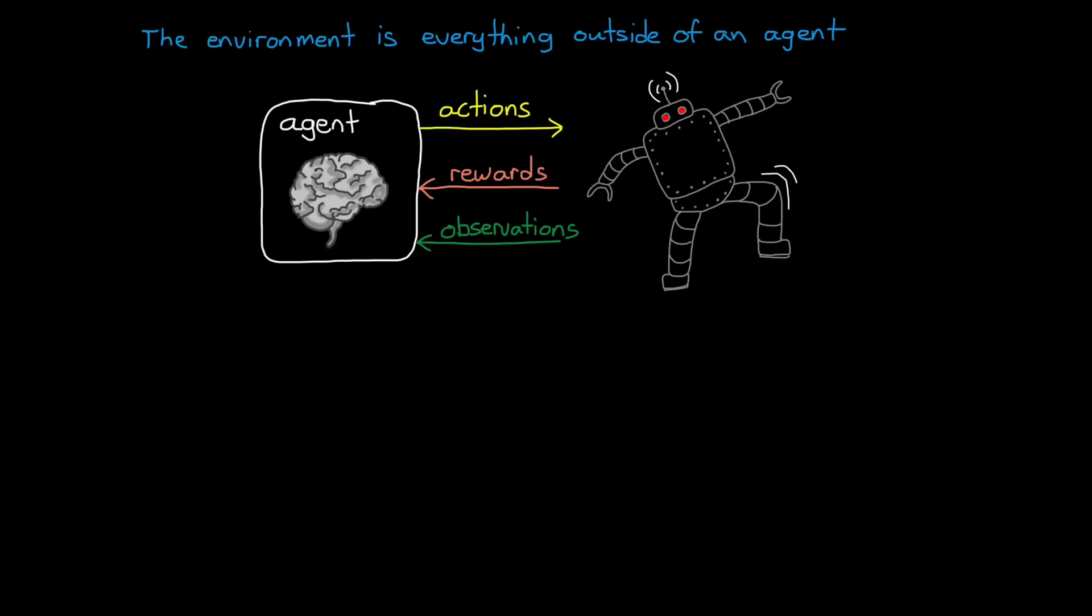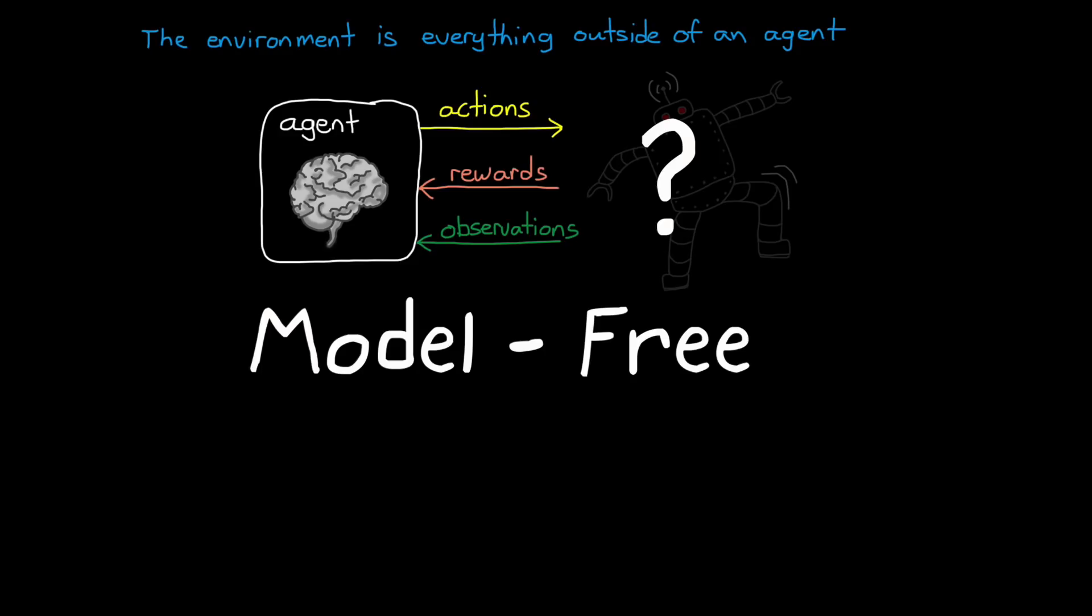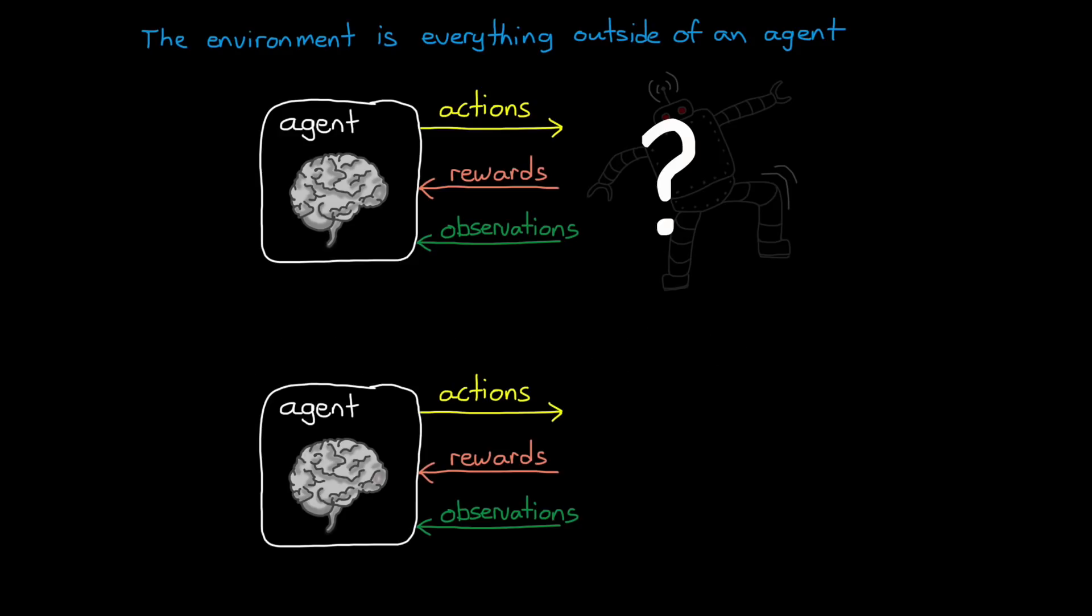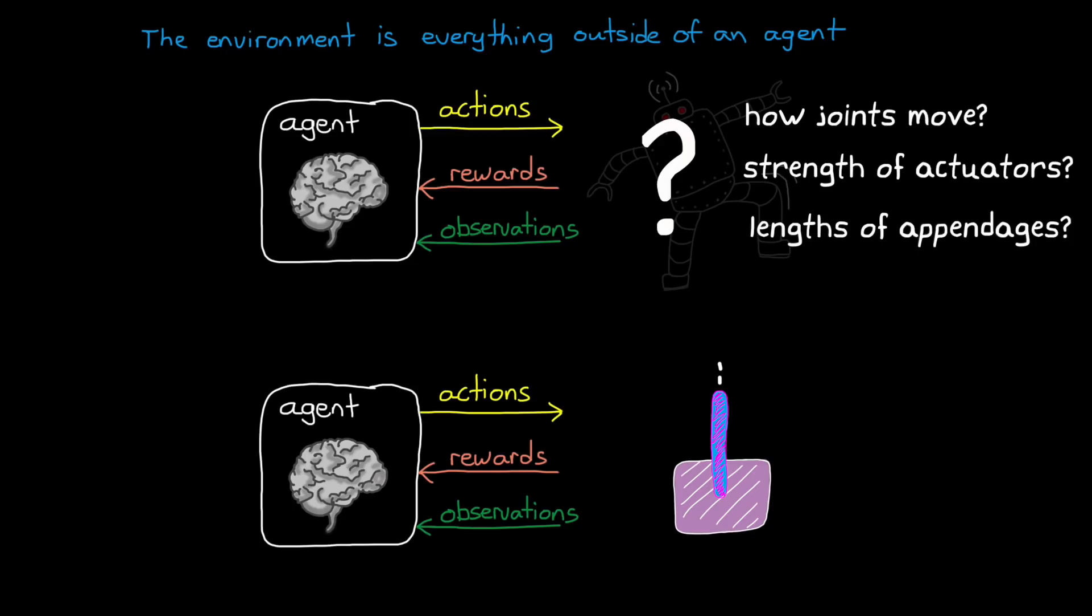And the reason this distinction is important is because with reinforcement learning, the agent doesn't need to know anything about the environment at all. This is called model-free RL, and it's powerful because you can basically just plop an RL-equipped agent into any system. And assuming you've given the policy access to observations, actions, and enough internal states, then the agent will learn how to collect the most reward on its own. This means the agent doesn't need to know initially anything about our walking robot. But it'll still figure out how to collect rewards without knowing, for example, how the joints move, or how strong the actuators are, or the lengths of the appendages.